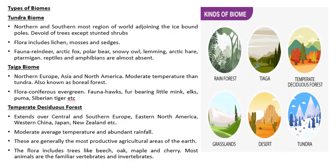The first type is the tundra biome. It is the northern and southernmost region of the world that adjoins the ice-bound poles, devoid of trees except stunted shrubs. The flora found here includes lichens, mosses, and sedges. Fauna includes reindeer, arctic foxes, polar bears, and snowy owls. Reptiles and amphibians are almost absent.